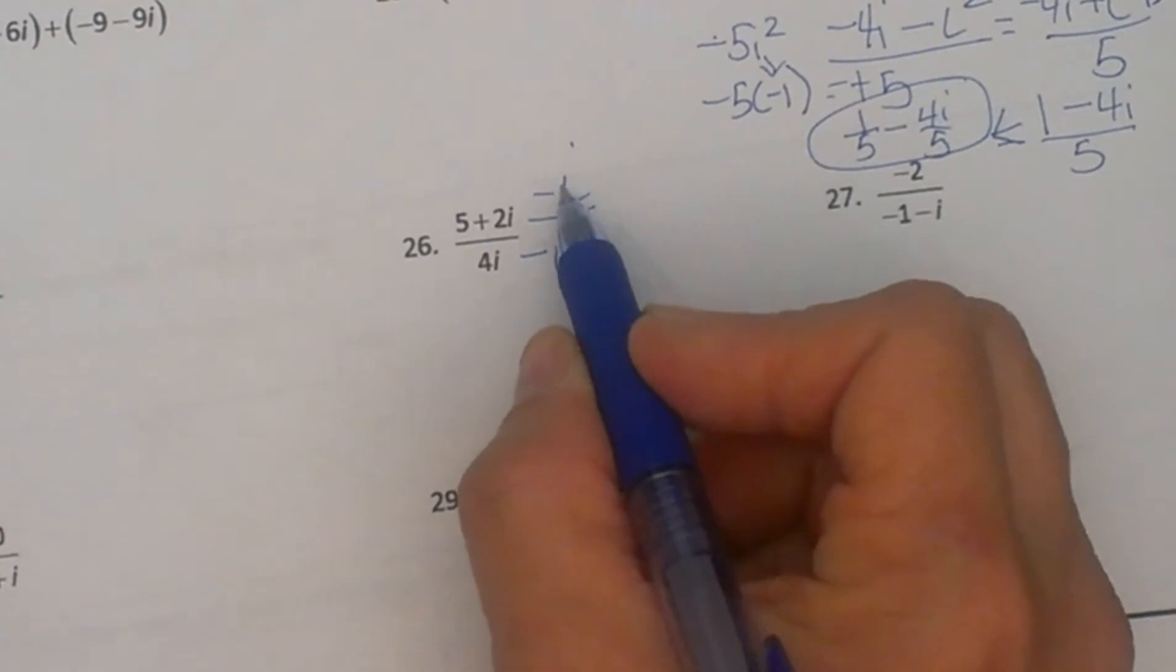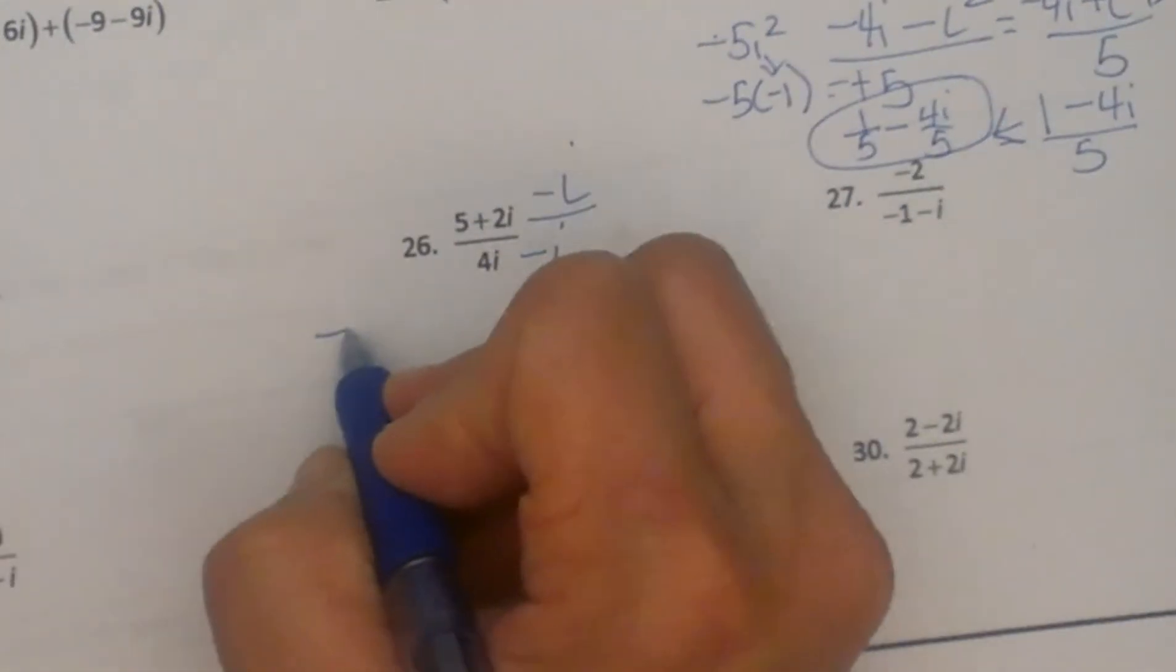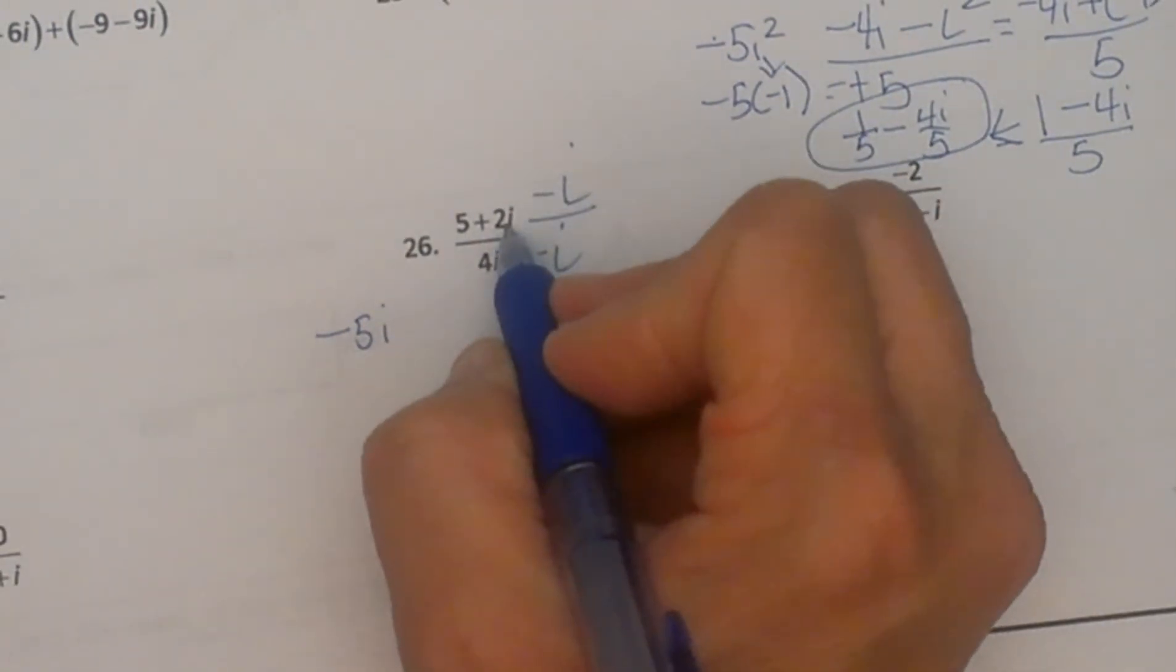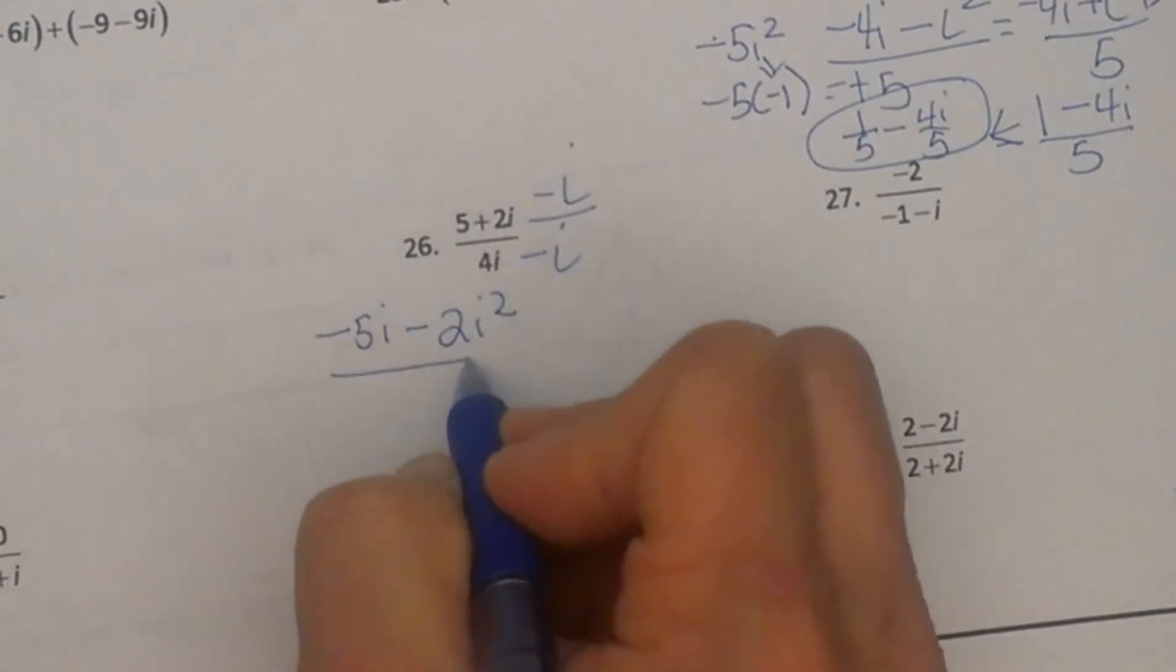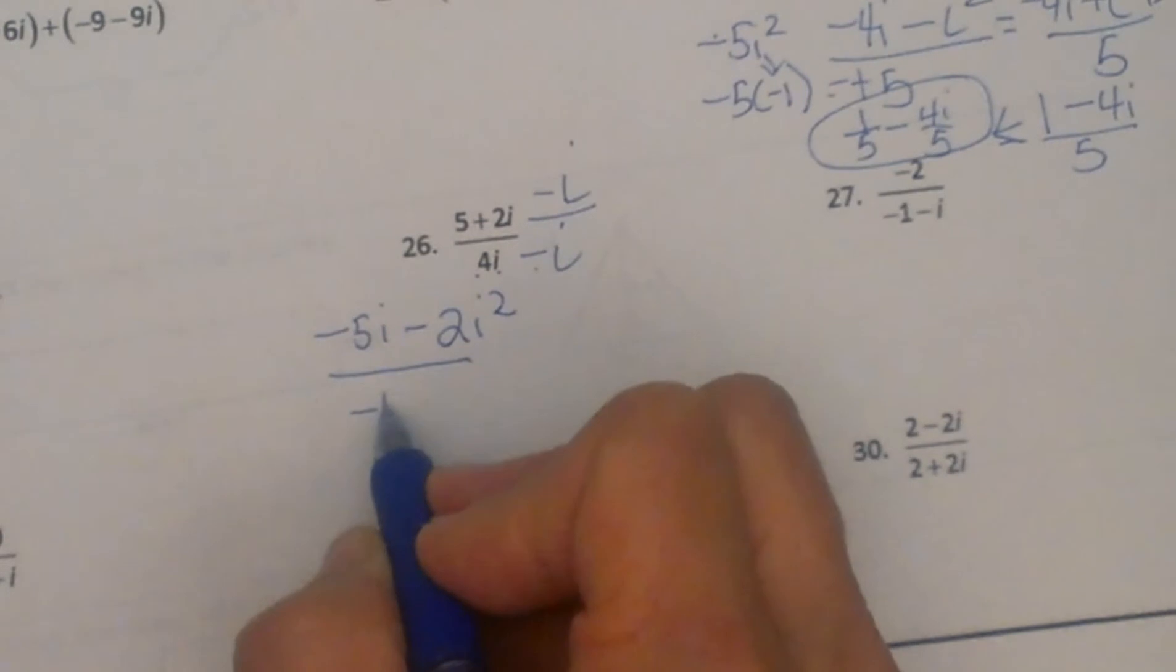This time I am going to do the top first, the numerator. So negative i times 5 is negative 5i. Negative i times positive 2i is negative 2i squared. Denominator would be negative i times 4i, negative 4i squared.